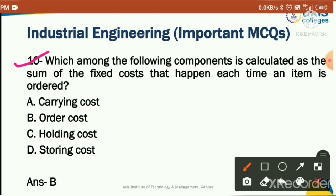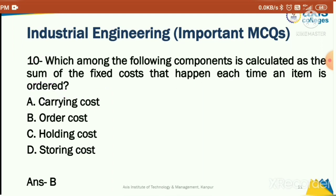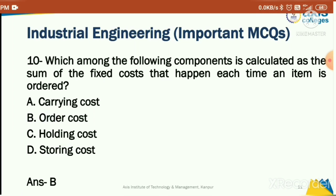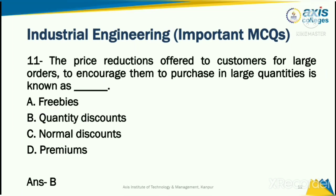Which among the following component is calculated as the sum of fixed costs that happen each time an item is ordered? When you place an order, the cost incurred is your ordering cost. Option B is the correct answer: ordering cost.